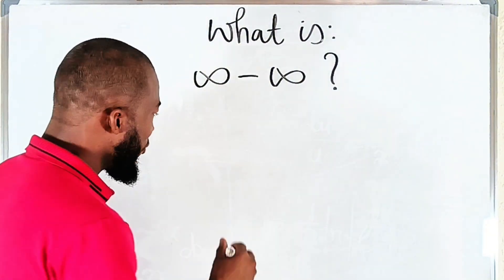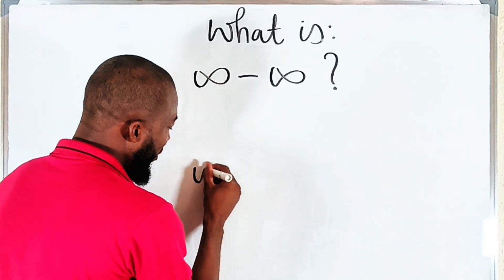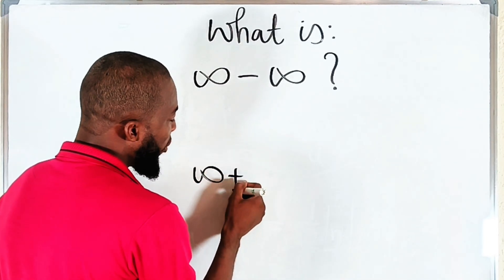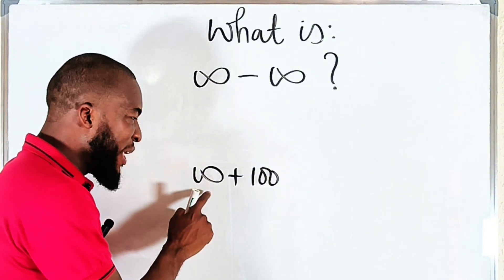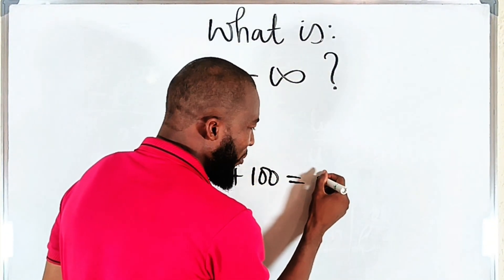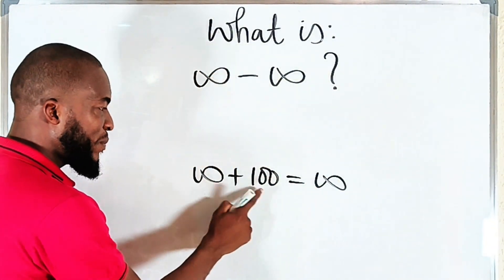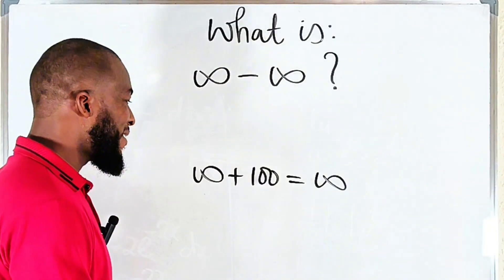One thing you should know about infinity is, for example, if you have infinity plus maybe one thousand, because this number is extremely huge, this will be infinity. This plus this will still be infinity.